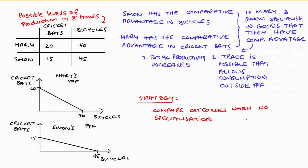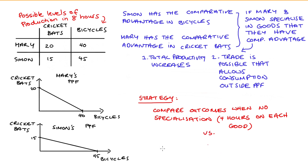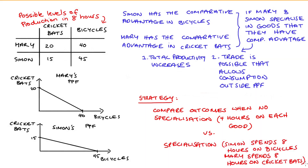The strategy I'm going to use to demonstrate these points is by comparing a situation of no specialisation, where neither Mary nor Simon give any priority to producing either good — so they're not favouring the production of one good. This essentially means they're spending half their time making cricket bats and half their time making bicycles — an equal allocation of resources to each good. I'm going to compare this with full specialisation, where Mary only makes cricket bats and Simon only makes bicycles.